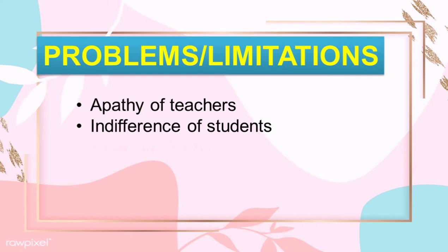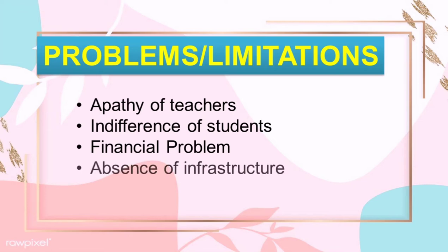The third one is financial problem — the one-time investment in these aids is costly and may not be affordable by all schools. The fourth one is absence of infrastructure — lack of basic facilities such as classrooms, electricity, projectors, chart stands, and laboratory rooms used to keep models, posters, specimens, etc.